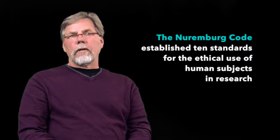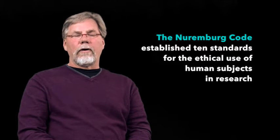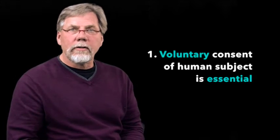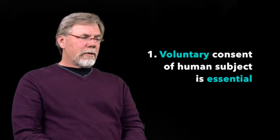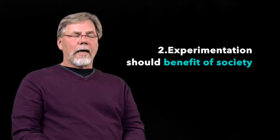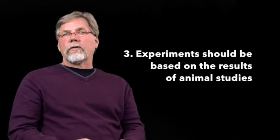Now, the Nuremberg Code was developed after the trials that followed World War II in 1949. And there was basically 10 points that came out of that. And as you can see here, it involves the voluntary consent of human subjects. The experiment should have some benefit to society. The experiment should be based on animal studies. And this is one of the first times that actually animals became a focal point of doing experimentation on before working on humans.